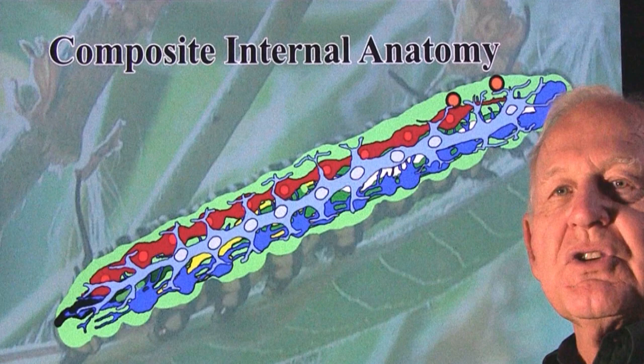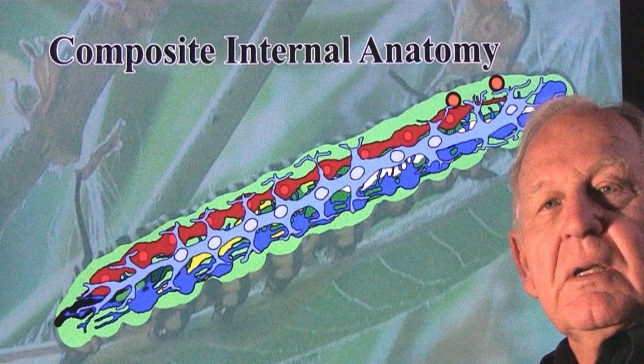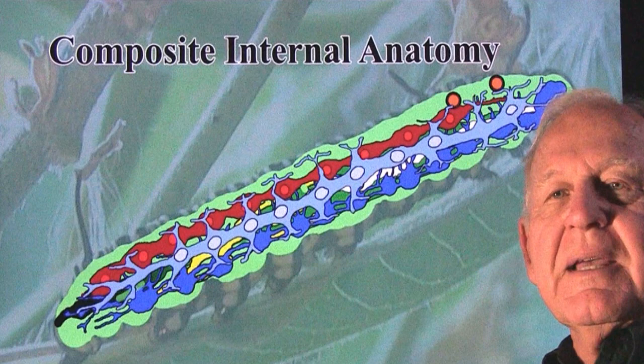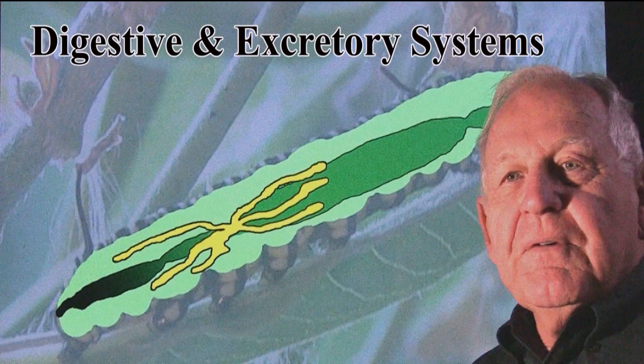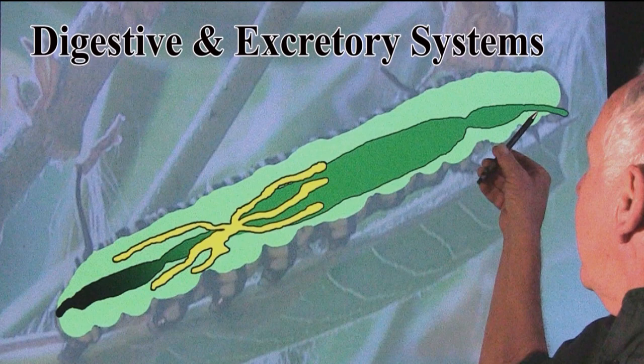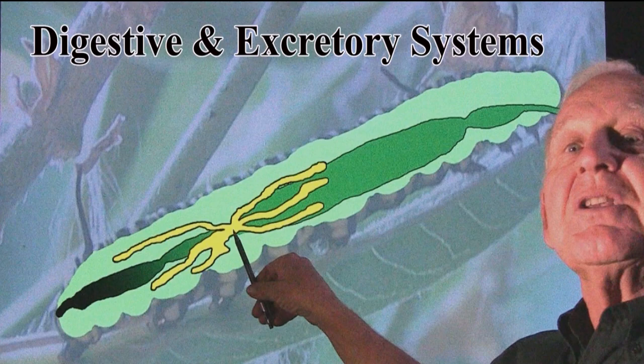You can see in this diagram that different colors represent different systems. We're going to examine each of these systems and try to make sense out of what goes on inside a caterpillar. The first system we'll talk about is the digestive system, represented by green, and the malpighian tubules of the excretory system, represented by yellow.